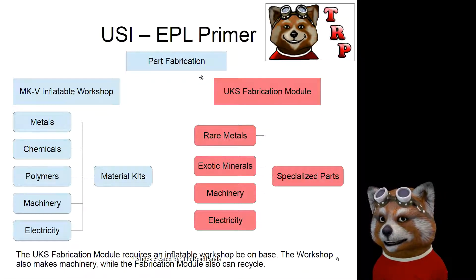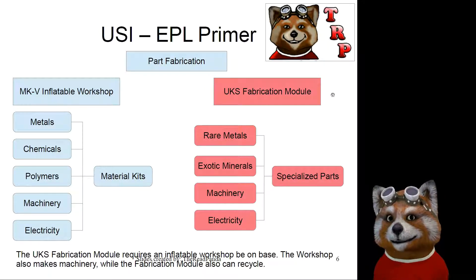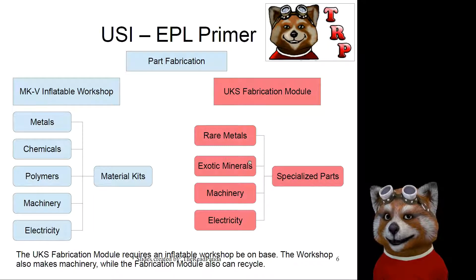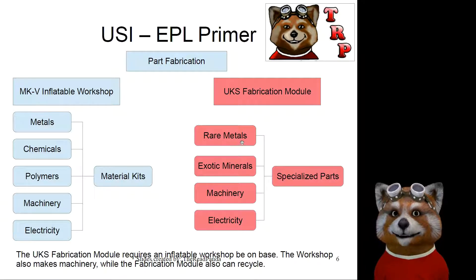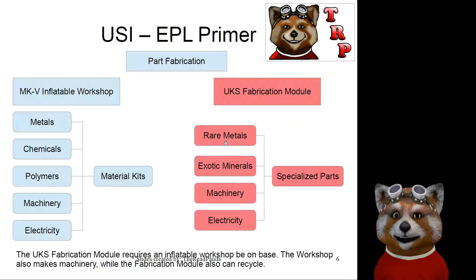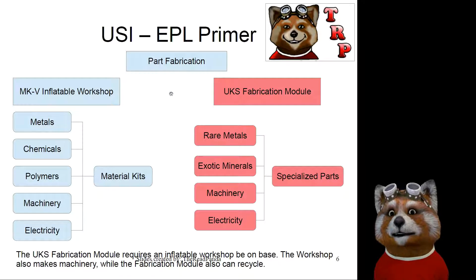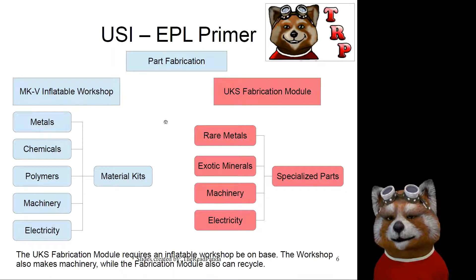If you want to make specialized parts, you're going to need the UKS Fabrication Module — one of the larger Mark III parts. It requires rare metals, exotic minerals, machinery, and electricity. Remember there is no processing step for rare metals and exotic minerals — these have to be mined directly at a concentration higher than 5%, or you can get them from dirt as long as the planetary concentration is above 2.5% for the Mark V, or from the industrial regolith sifter regardless. You're not going to get a lot of it unless you're processing a lot of dirt, so keep that in mind.